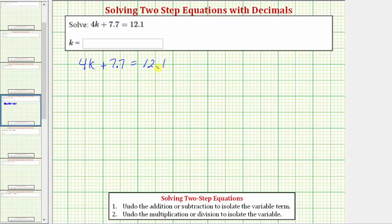In order to solve the equation for k, we need to isolate k on one side of the equation. And because k is on the left side of the equation, our solution will be in the form k equals some value that makes the expression on the left equal to 12.1.